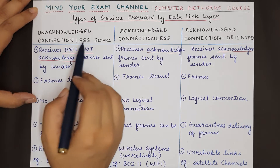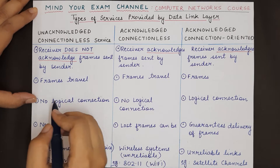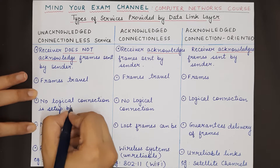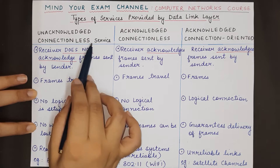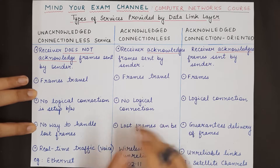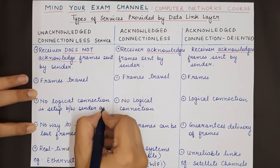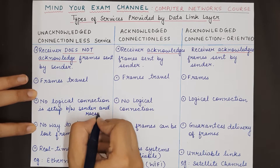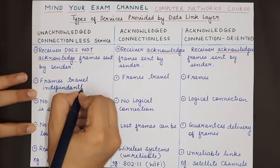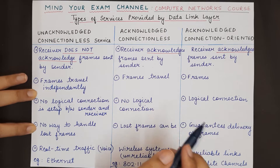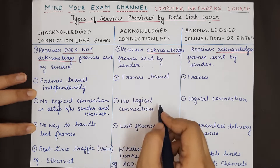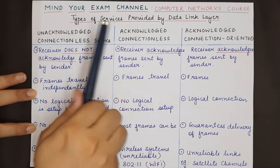Now, connectionless versus connection-oriented: connectionless means that no logical connection and no fixed path is set up between the sender and receiver. The frames sent by the sender can travel independently — each frame is free to follow any available path to reach the receiver. In connectionless service, no logical connection is set up, whether it is acknowledged or unacknowledged.